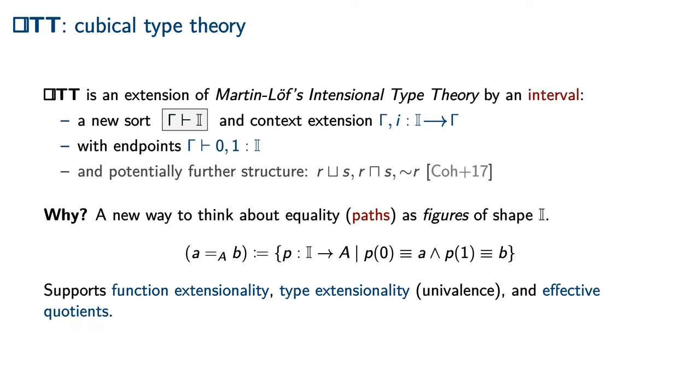Cubical Type Theory is an extension of Martin-Löf's Intensional Type Theory, or ITT, by an interval. An interval consists of a new sort called I by which the context can be extended. One has two constants, 0 and 1, of interval sort, called the endpoints.